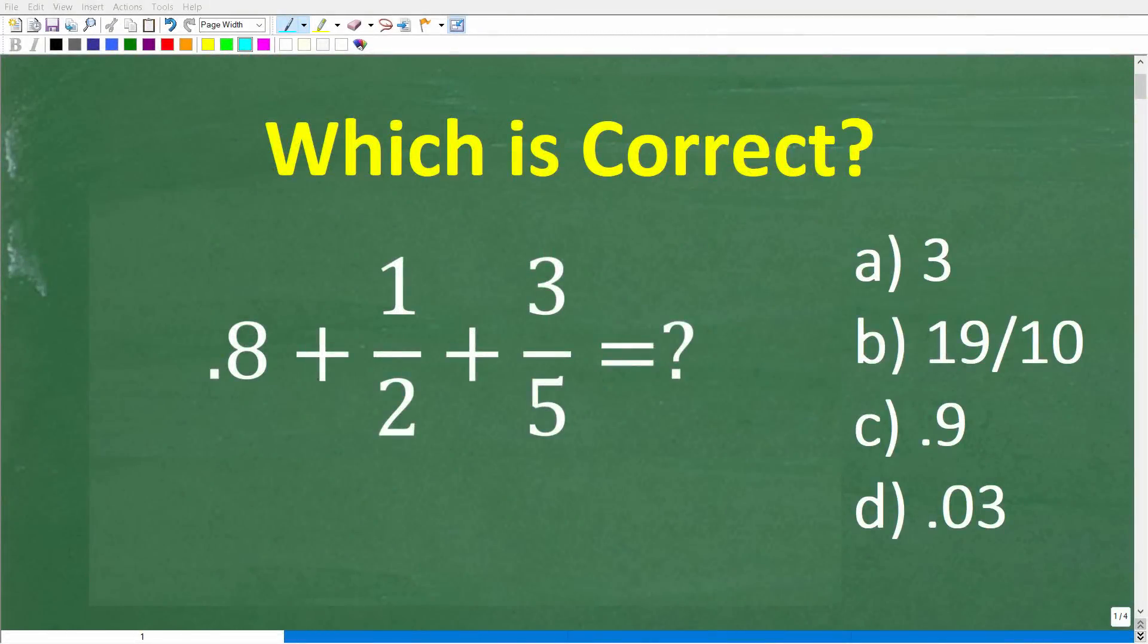If you actually understand basic math, this should be a very easy problem to solve without using a calculator. Let's take a look at the problem. We have 0.8 plus 1 half plus 3 fifths. What is this equal to?